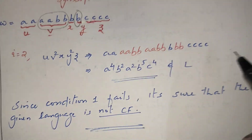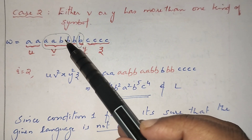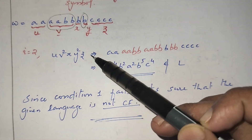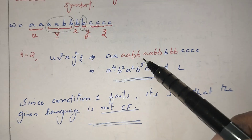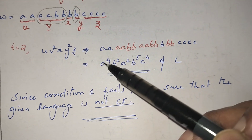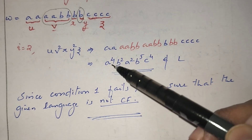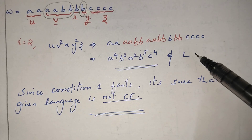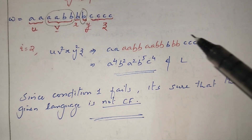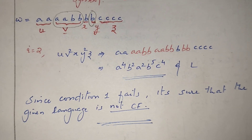Another case: both v and y contain two different symbol types — not all a's or not all b's, not the same symbol. After pumping v and y we get a string like a^4 b^2 a^2 b^5 c^4, which is not in the format a^n b^n c^n. Therefore this string does not belong to the language and condition one fails. So it is certain that the given language is not context-free. In this way you can prove that a given language is not context-free by using the pumping lemma.